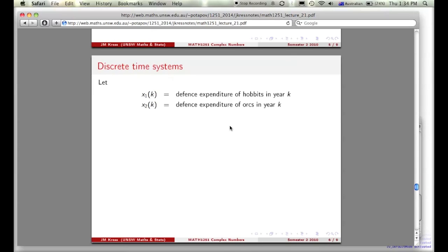You can use this interpretation: you can think of one sequence of numbers as the defense expenditures of hobbits in year k, and the other one as defense expenditure of orcs in year k. You can think of lots of different backgrounds for how you can interpret the sequence of numbers.